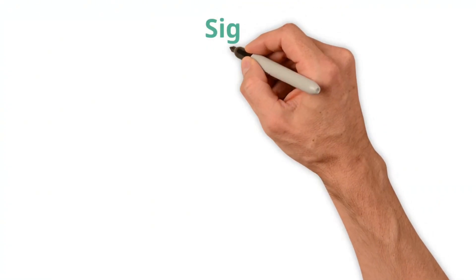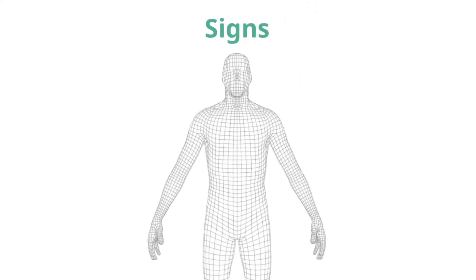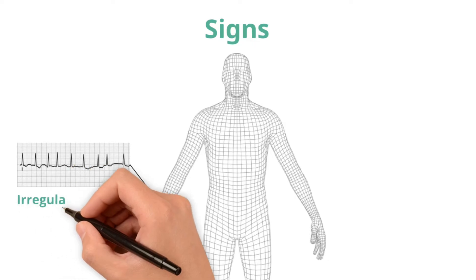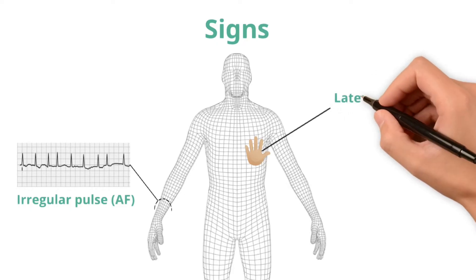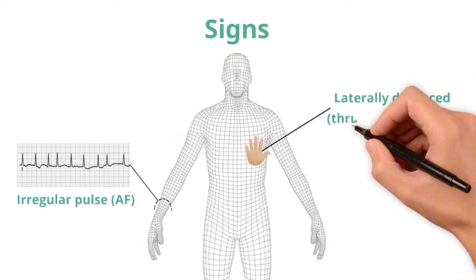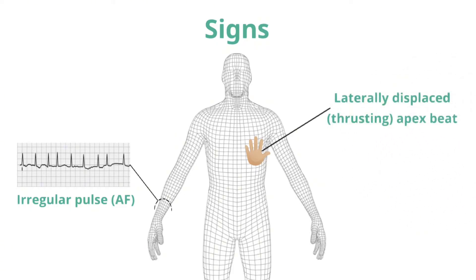What about the signs in those with mitral regurgitation? When palpating the pulse, it may be irregular due to atrial fibrillation. AF occurs in up to 50% of those with significant mitral regurgitation. In severe mitral regurgitation, palpation of the chest may reveal an apex beat displaced laterally and inferiorly from its normal position in the 5th intercostal space mid-clavicular line. It's forceful and thrusting, but not particularly sustained as it is in LV hypertrophy.